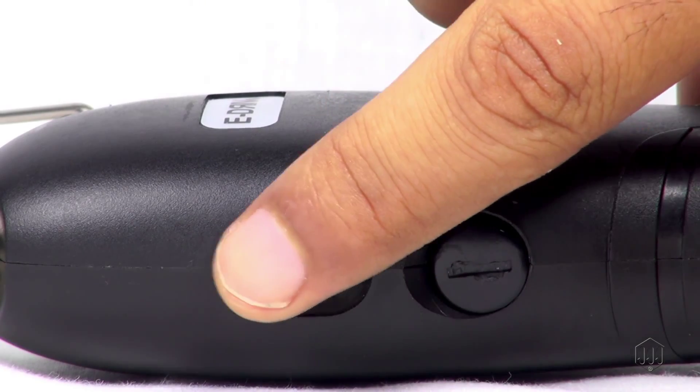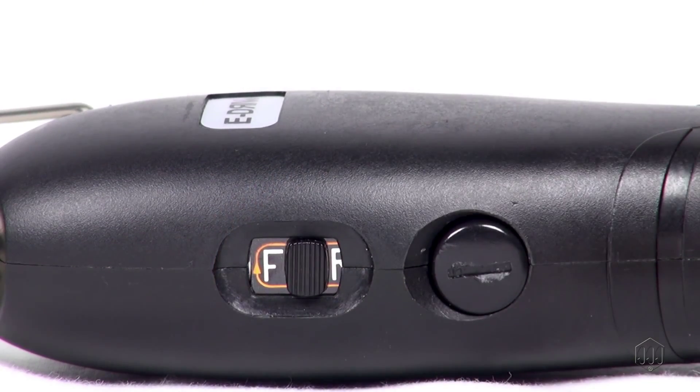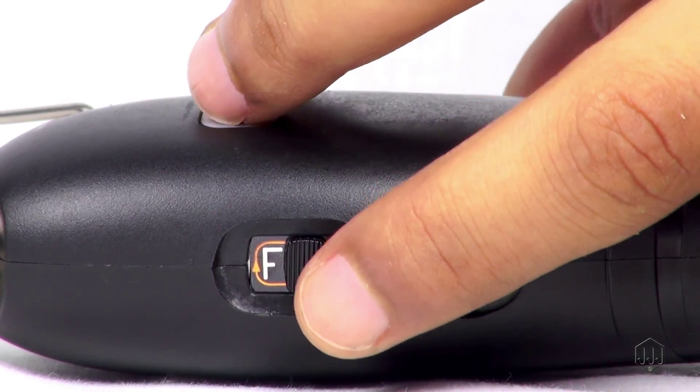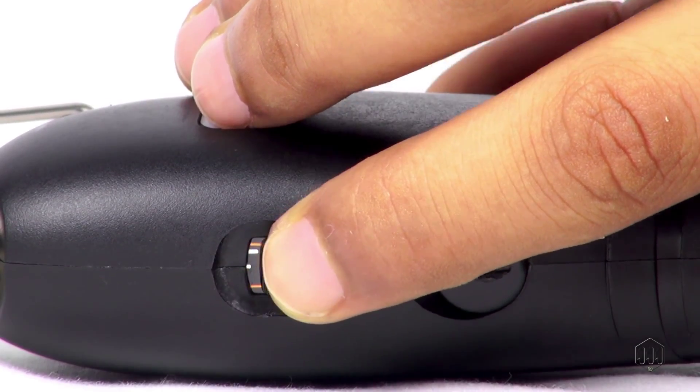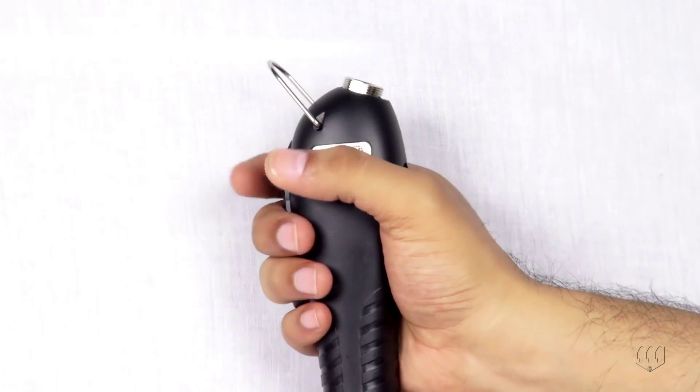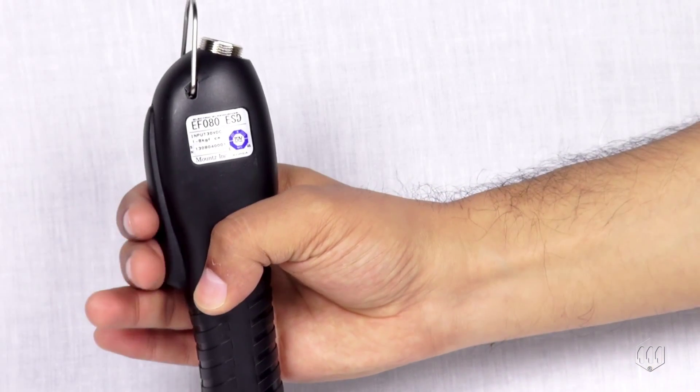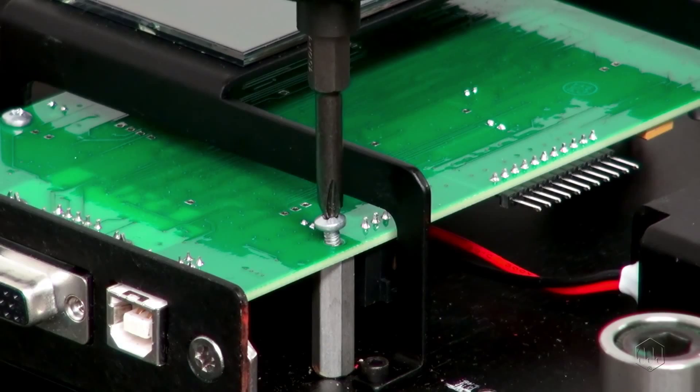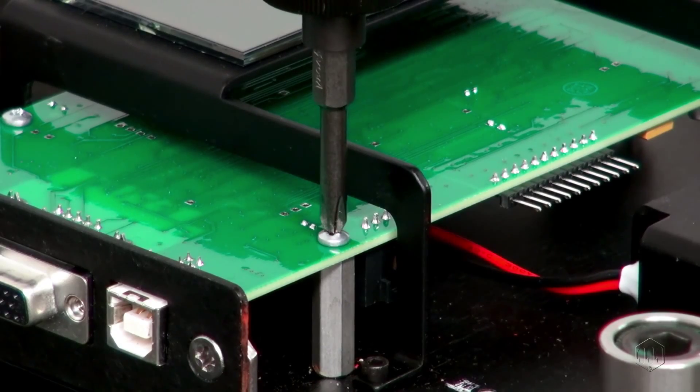Slide the switch to the forward position for clockwise operation and reverse for counterclockwise operation. Always hold power tools firmly. Squeeze the lever to run the tool. It will automatically stop when the preset torque is reached.